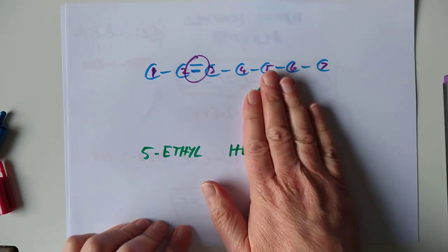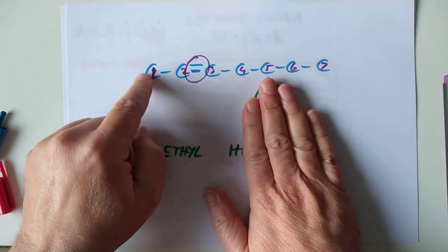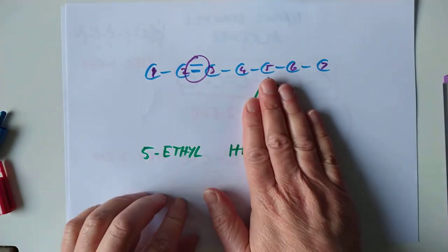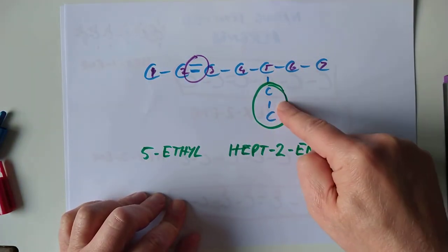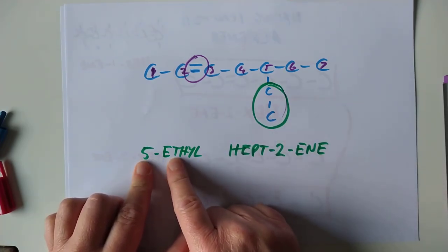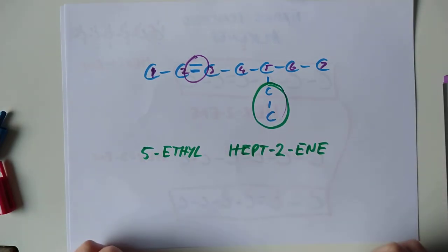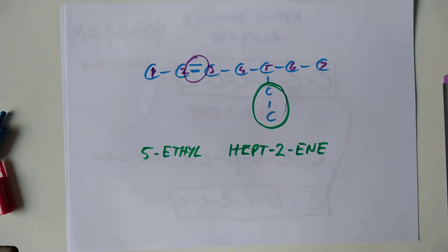So we disregard the branch now. We find the double bond, and we number nearest the double bond. And then whichever carbon the branch is on, that's the position of that particular branch. So 5-ethyl hept-2-ene. I'll stop the video there, and I think I'll just set some examples for you guys to try. Thanks for listening. Bye-bye.